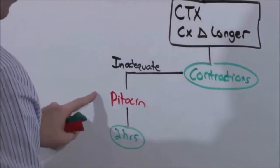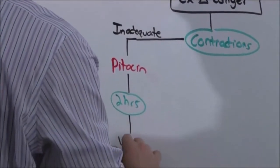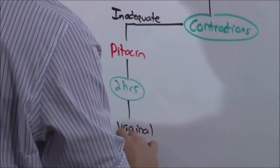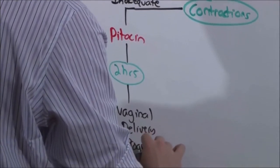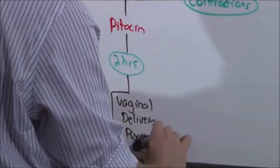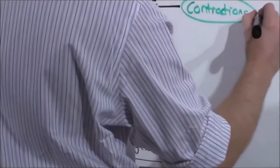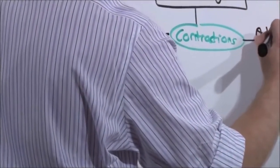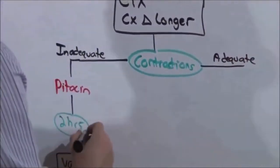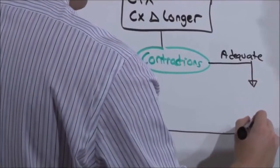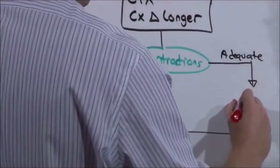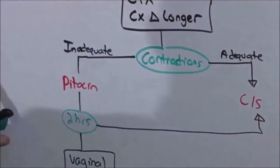If after initiation of Pitocin, she has resumed her vaginal delivery, you simply continue. You have spared her a C-section. But if in the beginning contractions were adequate, or after two hours of Pitocin there's been no change, there's not really any options left. Baby's got to come out, perform a C-section. This is for stage one, prolonged latent phase, and prolonged active phase.